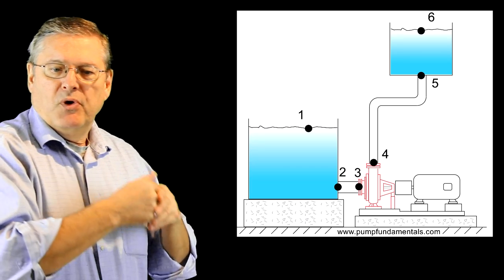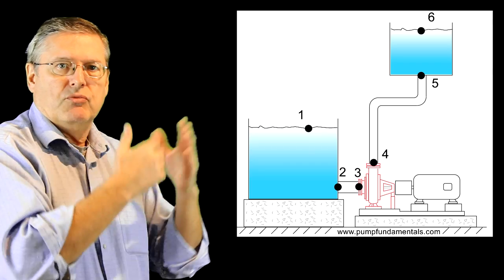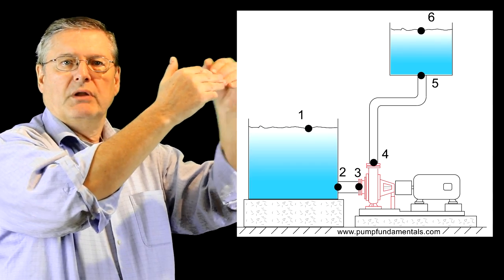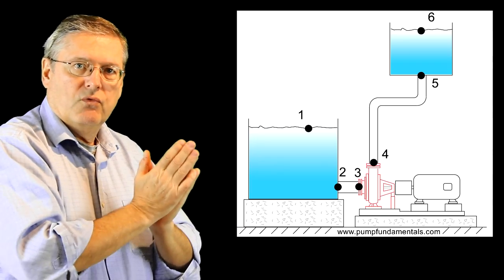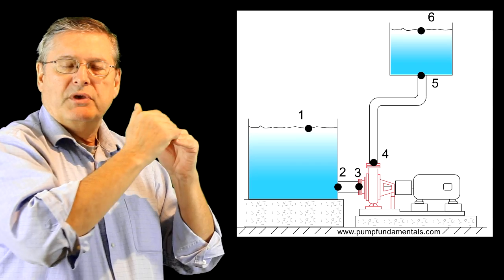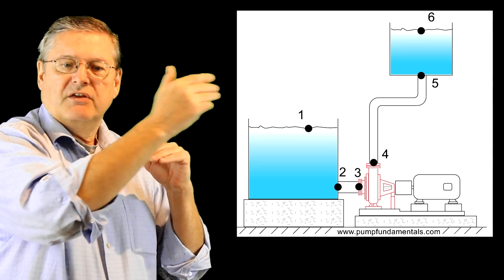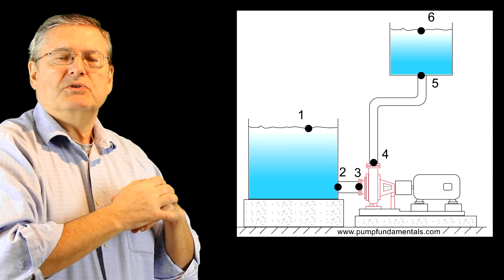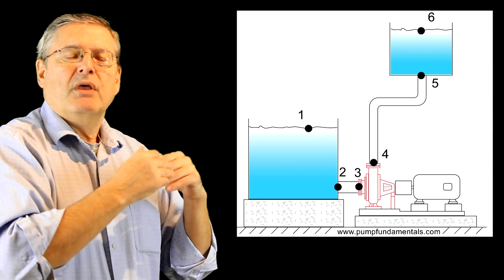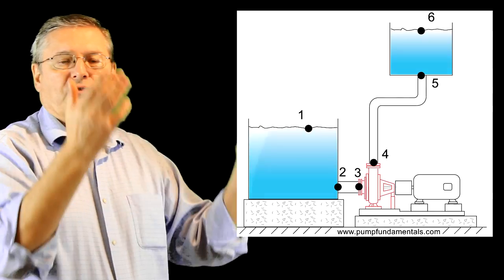Point three has the same pressure as two minus a little friction loss in the pipe. Point four is the pressure developed by the pump. Point five is right under the upper tank — as we go up we lose pressure because there's less weight of water, so pressure at five equals pressure at four minus the pressure corresponding to that height minus any friction loss. Finally, point six is at atmosphere again, so there's zero pressure.